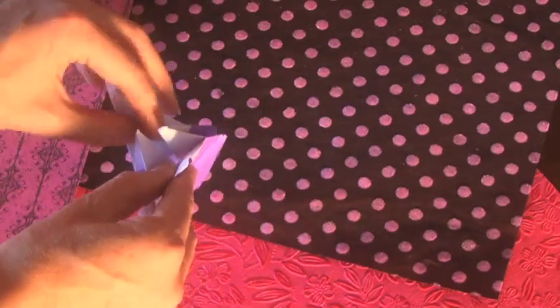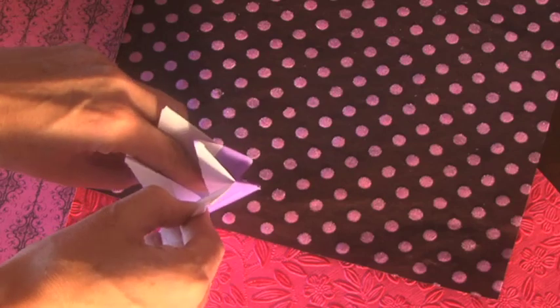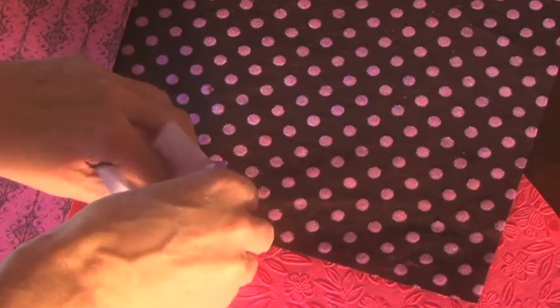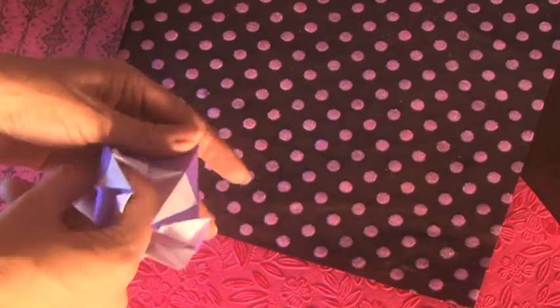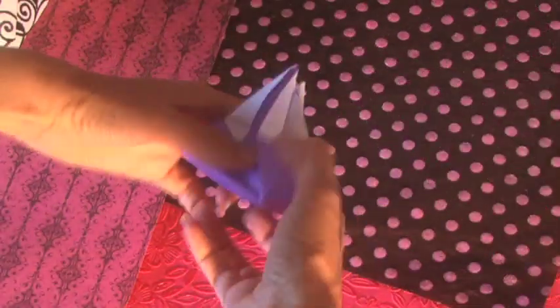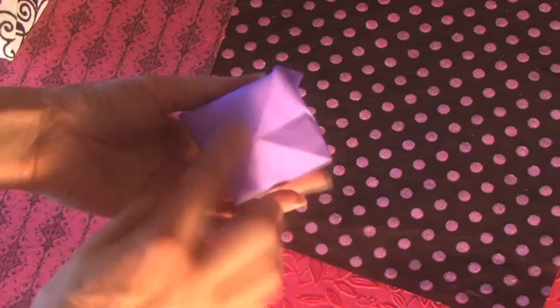So there's your bottom now and your flaps are straight up. You take the pointy top, fold it over.